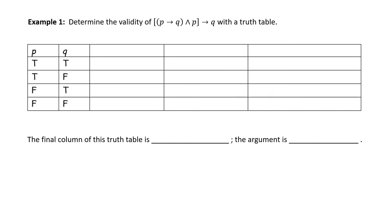Let's begin by constructing the truth values for the conditional P → Q. By definition: true implies true is true; true implies false is false; false implies true is true; and false implies false is also true.